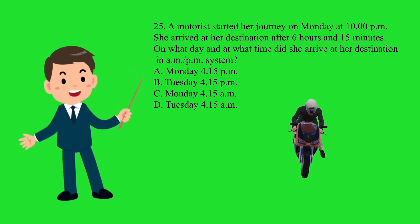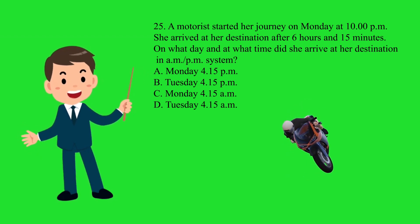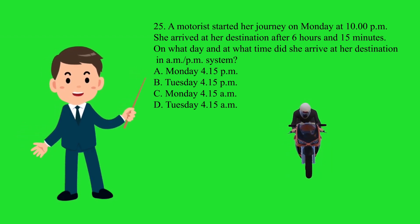Question 25. A motorist started her journey on Monday at 10 p.m. She arrived at her destination after 6 hours and 15 minutes. On what day and at what time did she arrive at her destination in a.m. or p.m. system?